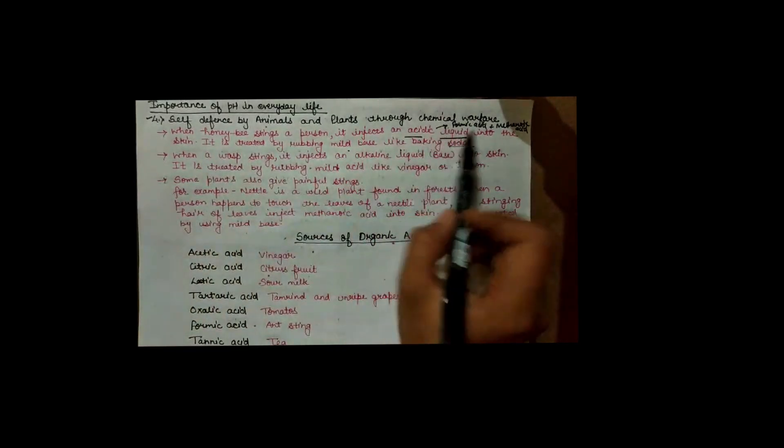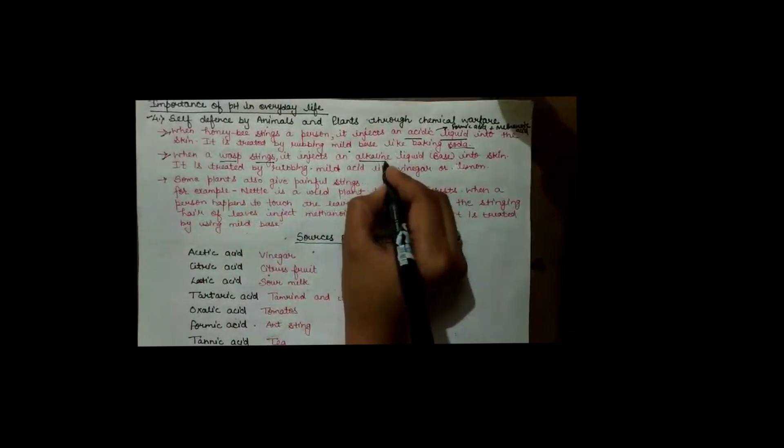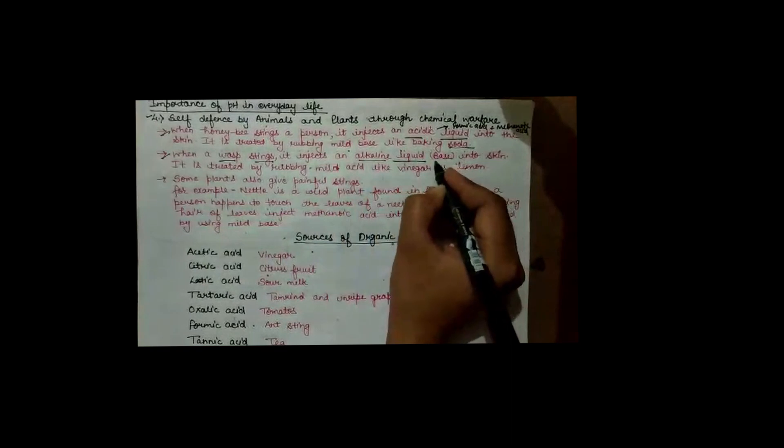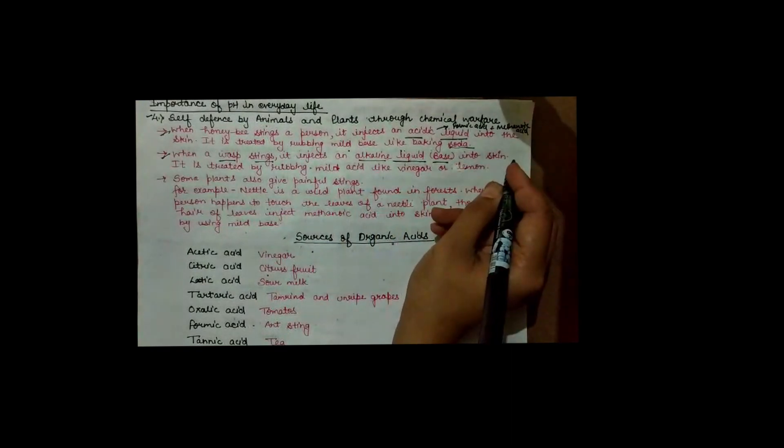Always remember: honeybee sting contains acidic liquid, and the name of that liquid is formic acid, also called methanoic acid. In the second case, when a wasp stings, it injects an alkaline liquid — meaning a base — into the skin.